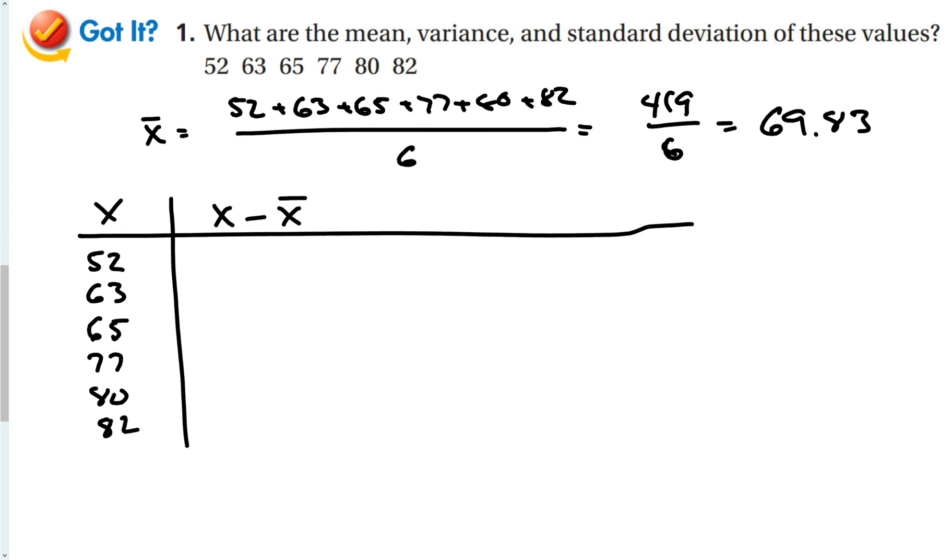We take x minus x bar. 52 minus 69.83 gives me negative 17.83. I'm going to do these right in a row with a calculator. 63 minus 69.83 squared is 46.77. Then 65 minus 69.83 gives negative 4.83 squared is 23.33.